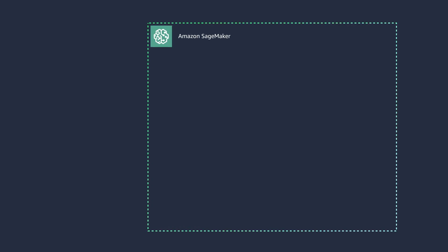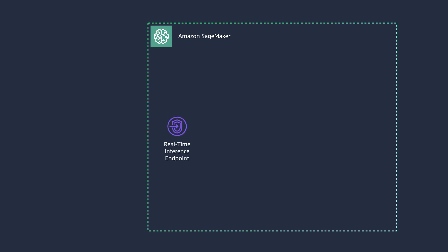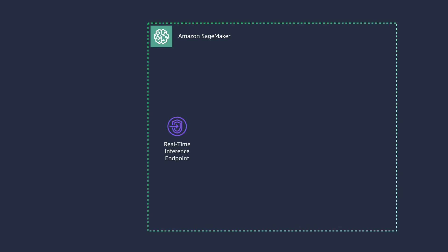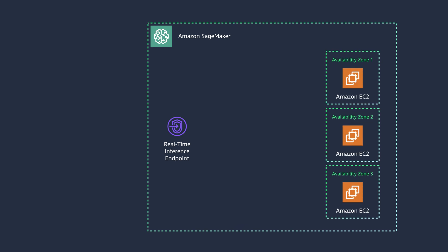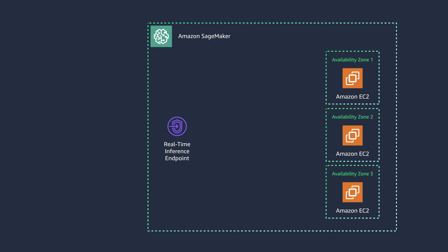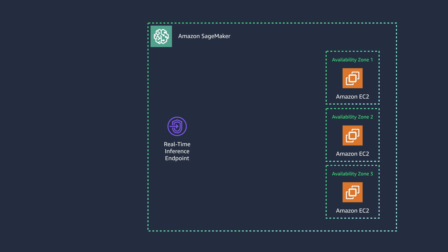Coming back to the fraud detection use case, based on the requirements of low latency, high throughput, payload size being less than 4 MB, and real-time prediction, you would use SageMaker real-time inference. To do so, you create a SageMaker model from the trained model artifact. Then you configure a real-time inference endpoint by specifying properties like EC2 instance types and counts. Then you deploy your model to the SageMaker hosting services and get an endpoint that can be used for inference to detect fraudulent transactions in real-time.